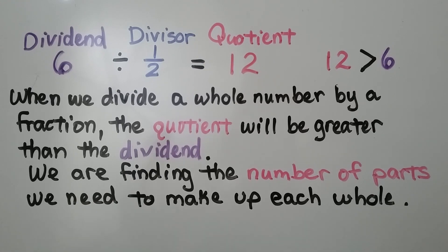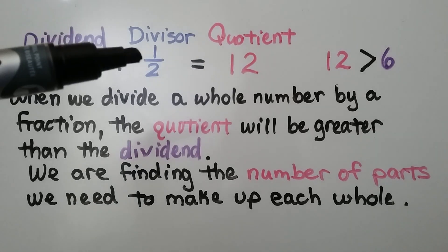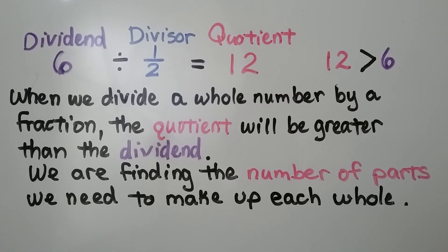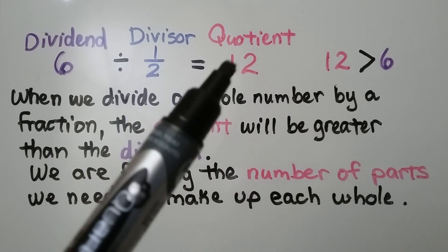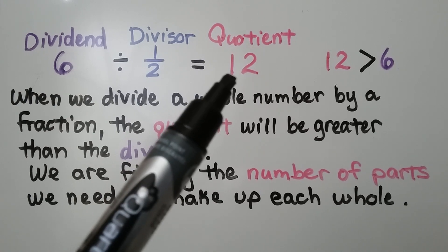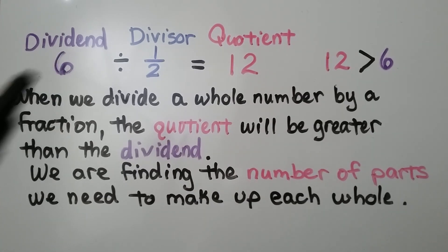When we divide a whole number by a fraction, the quotient will be greater than the dividend. We're finding the number of parts we need to make up each whole. Six divided by half is equal to twelve, and this quotient, twelve, is greater than the dividend, six.